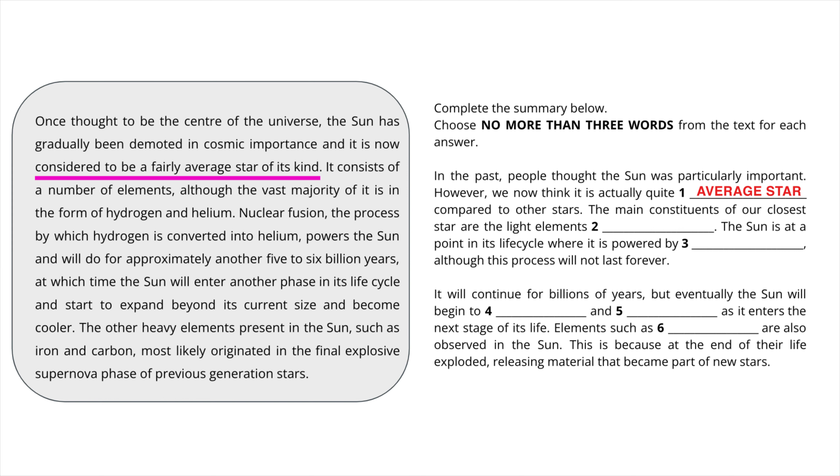In the similar way I found the other answers as well. The second answer is hydrogen and helium which is in the fifth sentence which says that there are a number of elements out of which the vast majority of it, that is the main constituents, are in the form of hydrogen and helium.